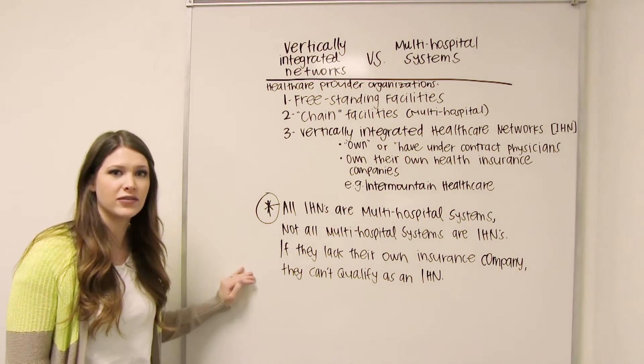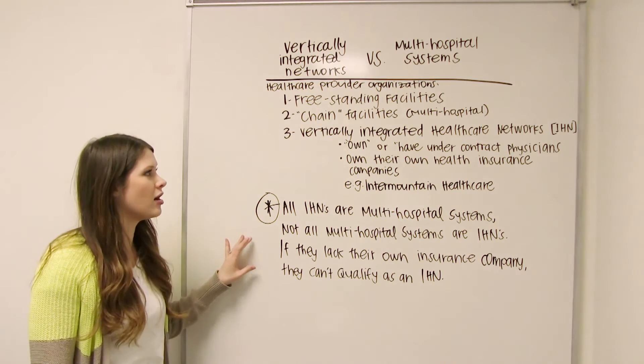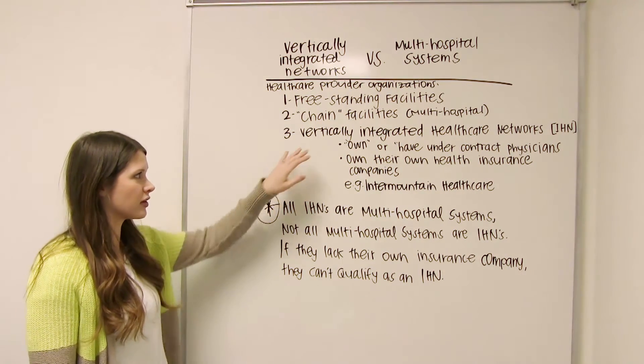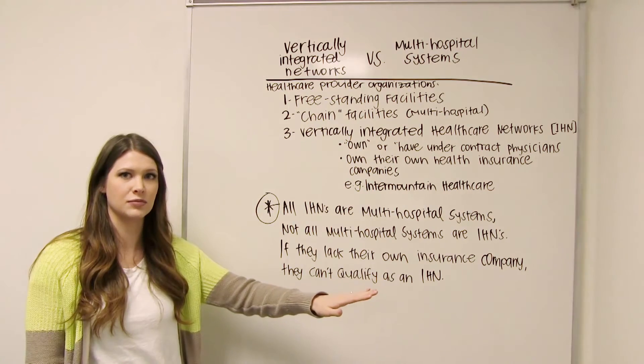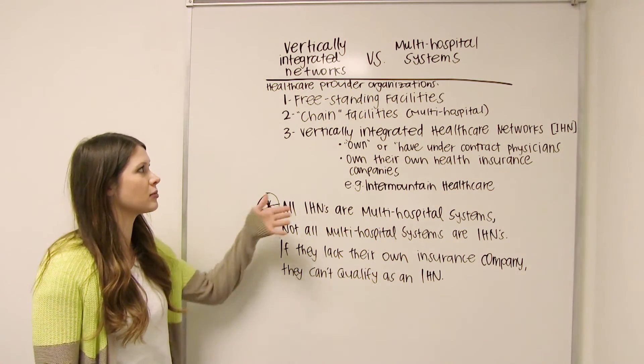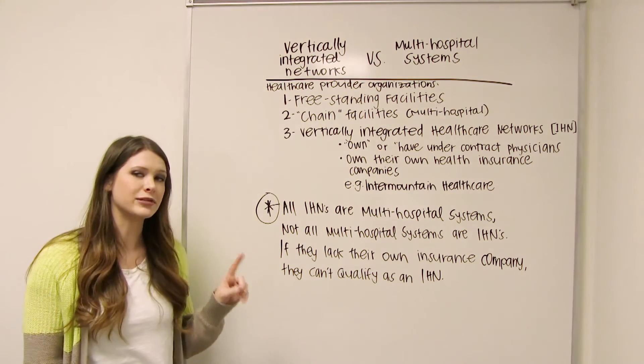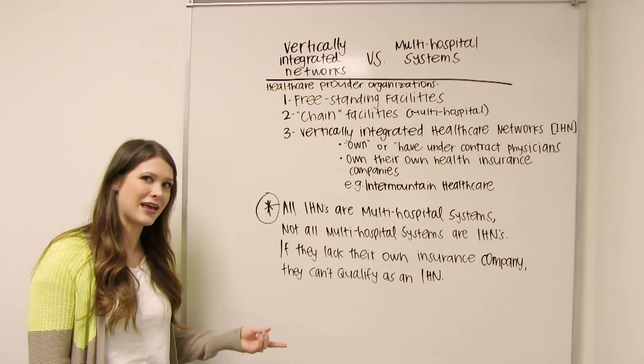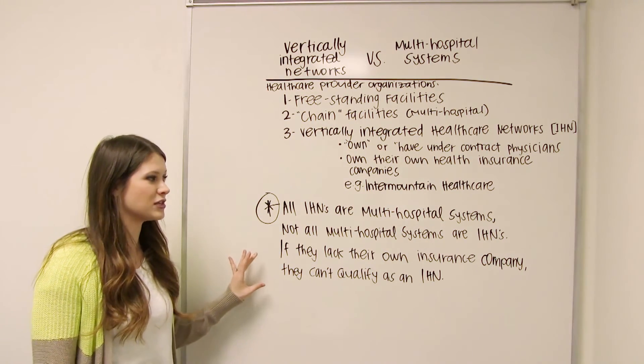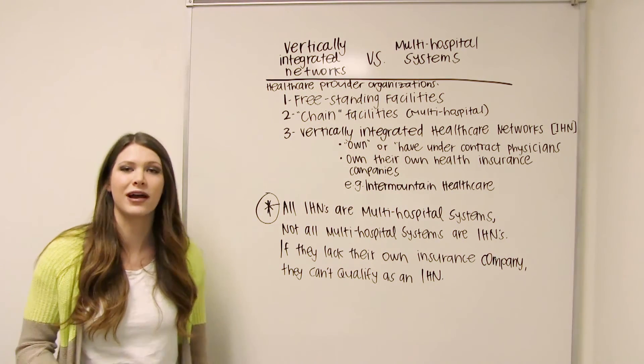So really the takeaway of this video is that all IHNs, or vertically integrated healthcare networks, are multi-hospital systems because IHNs are a subgroup of that. But not all multi-hospital systems are IHNs. If they lack their own insurance company, then they cannot qualify as an IHN.